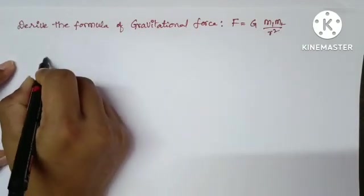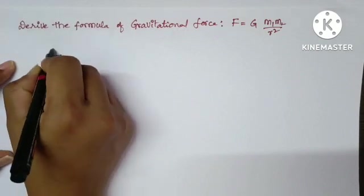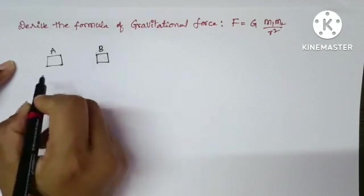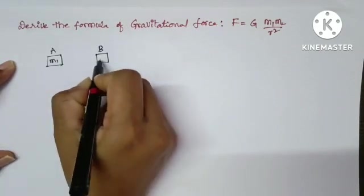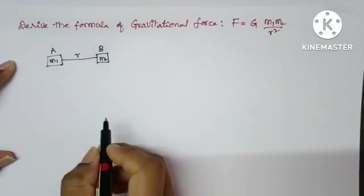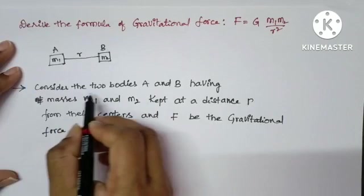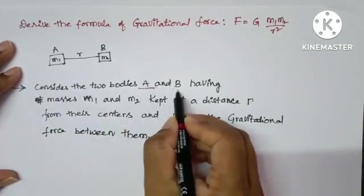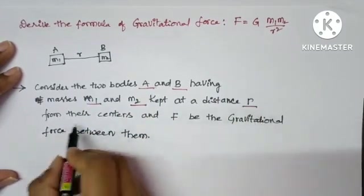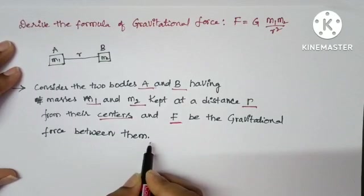For that, consider two bodies A and B having masses m1 and m2, both kept at a distance r from their centers. We have considered the two bodies A and B with masses m1 and m2 kept at a distance r from their centers, and here F is the gravitational force between them.